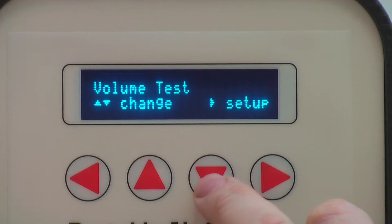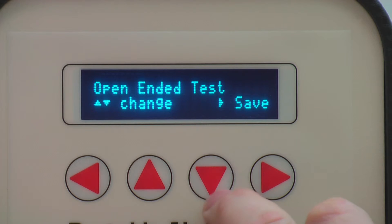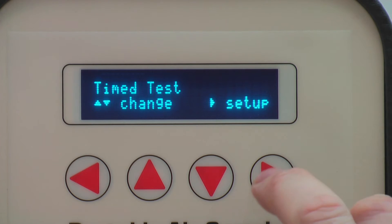The up and down keys will allow you to access the type of test selected. You have the following options: open ended test, time test, volume test, delayed time test, and delayed volume test. If you choose the open ended test, pressing the right arrow will just save this as the default mode.